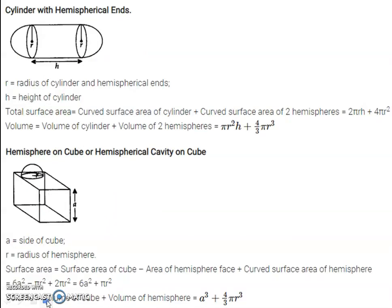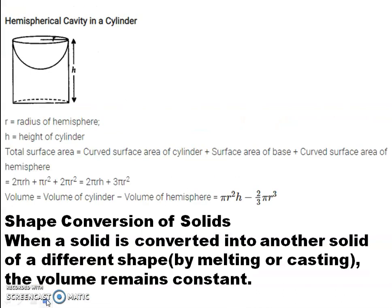Next is cylinder with hemispherical ends, and also hemisphere on cube or hemispherical cavity on a cube — you should learn those too. For a hemispherical cavity in a cylinder, if it is a cavity, you have subtraction. The most important topic in this chapter is shape conversion of solids, where all you deal with is the volume of solids, because when you convert one solid shape into another, the volume remains constant.